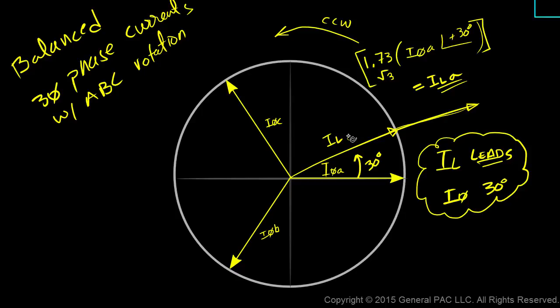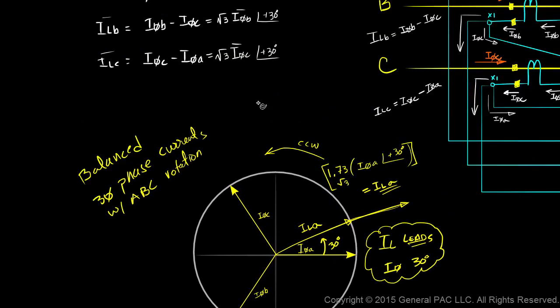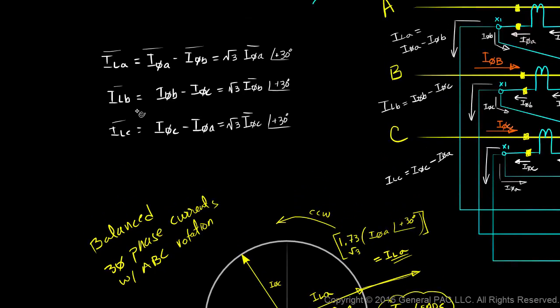Similar to what we did with line current a, we do the same exact procedure with line current b and line current c, which is this right here. So with line current b, we essentially take phase current b, we rotate it by 30 degrees in the counter-clockwise direction, and we multiply phase current b by the square root of 3 to get line current b. And we do the same thing with line current c.